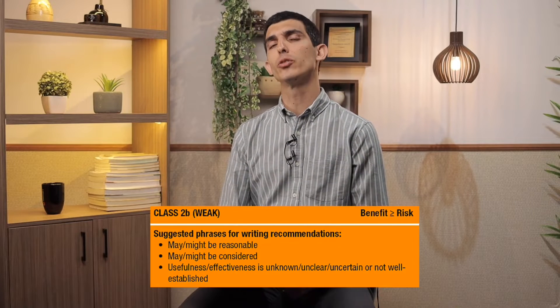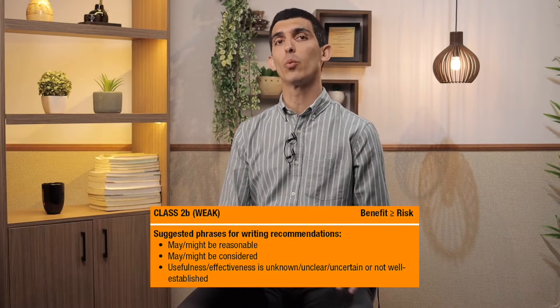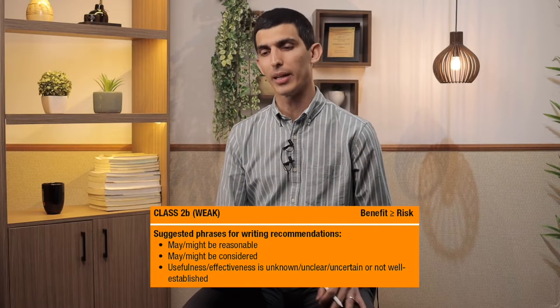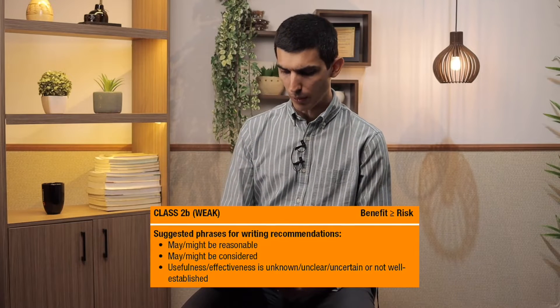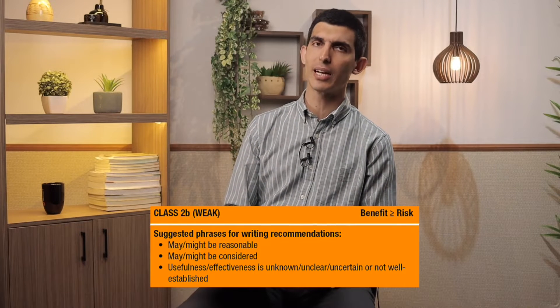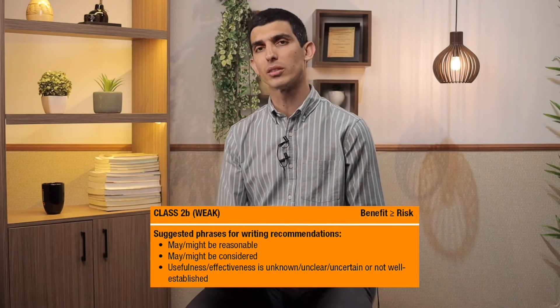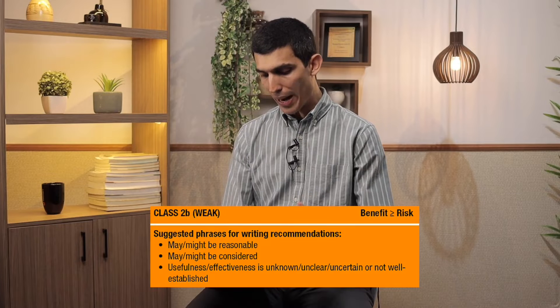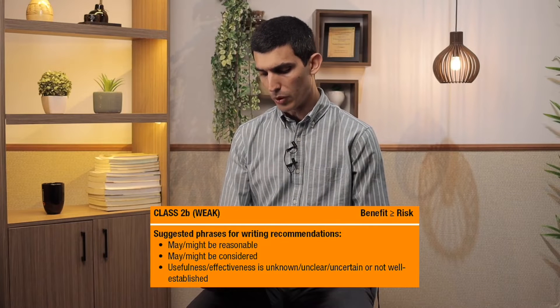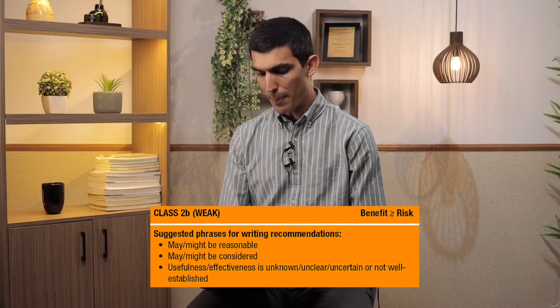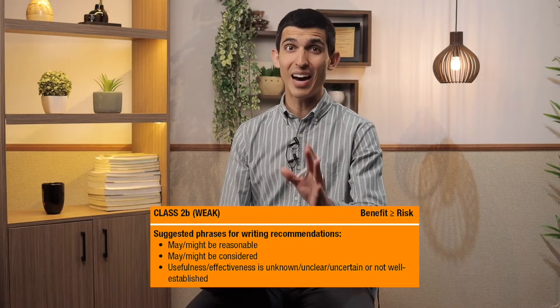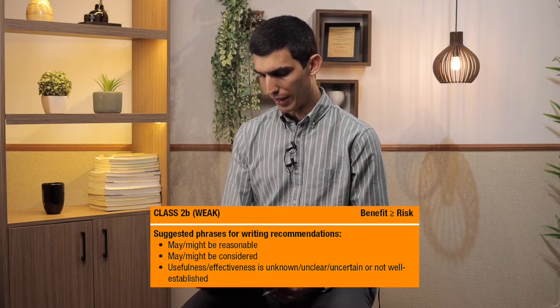A class 2B is an even weaker recommendation. A class 2B recommendation says that you may want to consider or might consider doing this. It may be reasonable to do, but it is not an absolute indication.